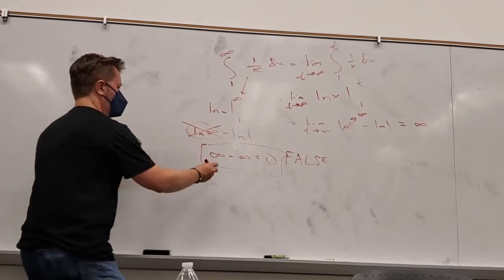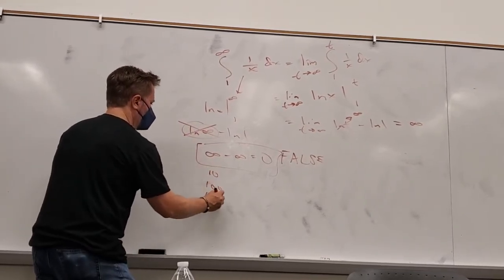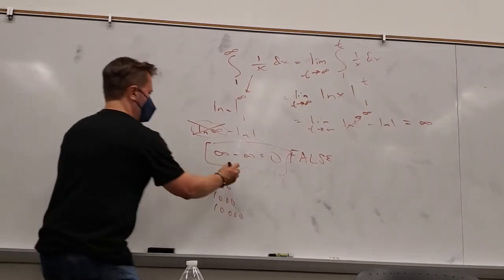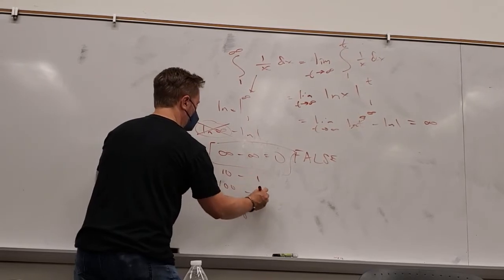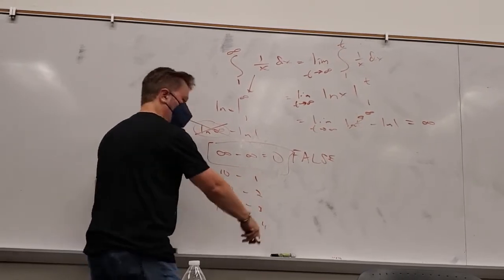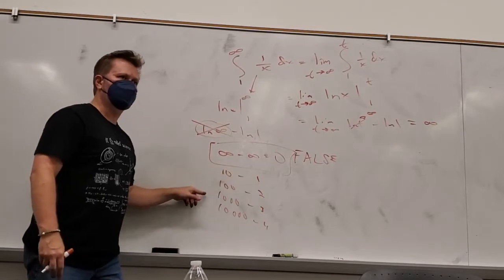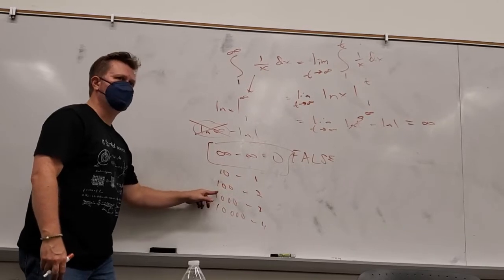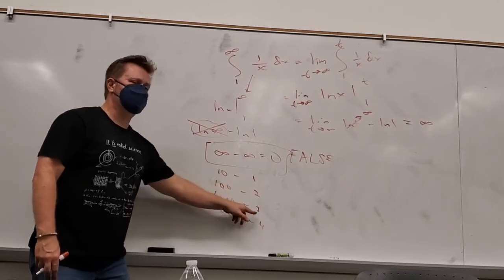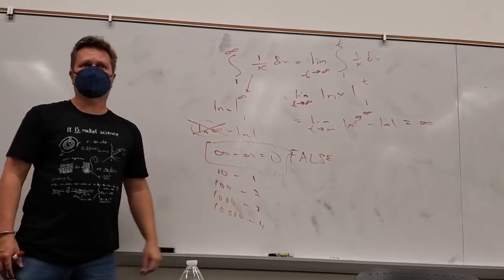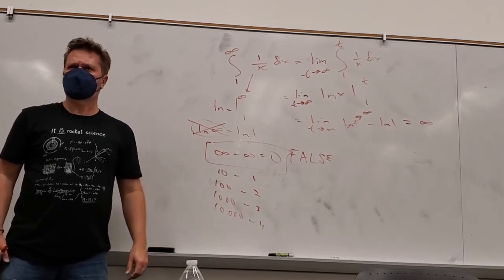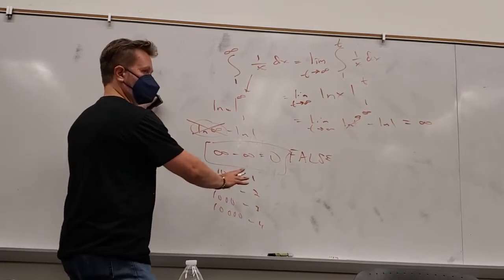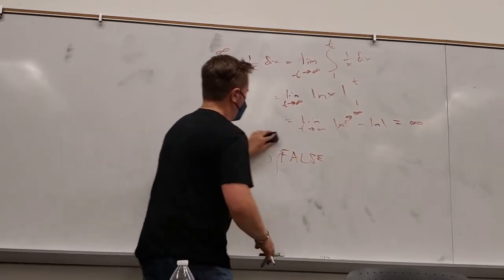For example: 10, 100, 1000, 10000 is going to infinity. And 1, 2, 3, 4 is going to infinity. But their difference — 9, 98, 997, 9996 — is itself going to infinity. So infinity minus infinity is not zero. It depends entirely on the rates. That's why you should never just plug infinity into an expression.